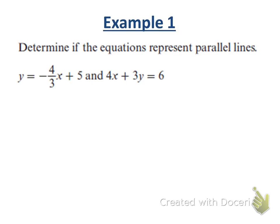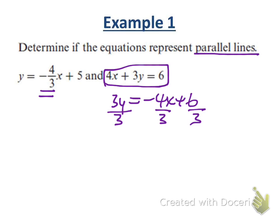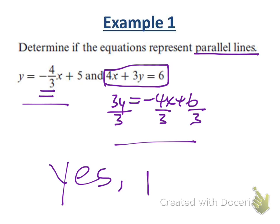Let's determine if two equations represent parallel lines. Their slopes have to be equal. This first line has a slope of negative four-thirds. For the second line, dividing everything by 3 gives Y equals negative four-thirds X plus 2. The Y-intercept of the first line is 5; the Y-intercept of the second line is 2. They're different lines with the same slope, so they are parallel.